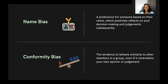Conformity bias is where we tend to behave similarly to other group members in our community, even if it contradicts our own opinions and beliefs. A simple instance is always going with majority votes regardless of the outcome — always going with the group with the highest number of votes, the largest say, the largest share — even if that contradicts what you believe or if those choices aren't healthy.